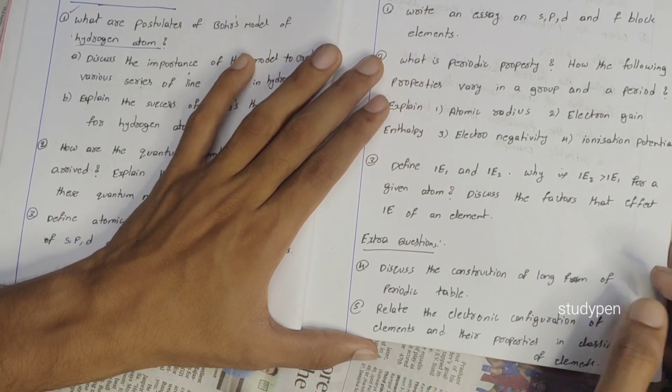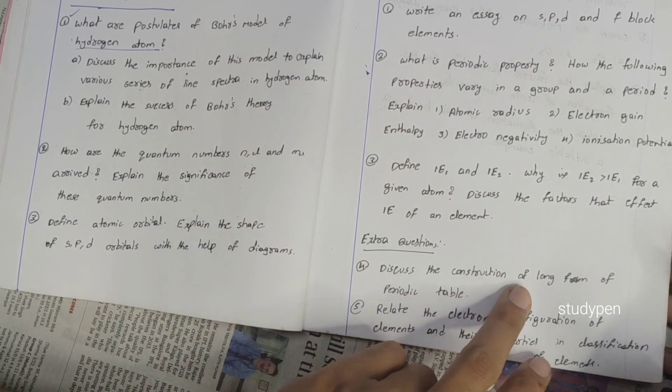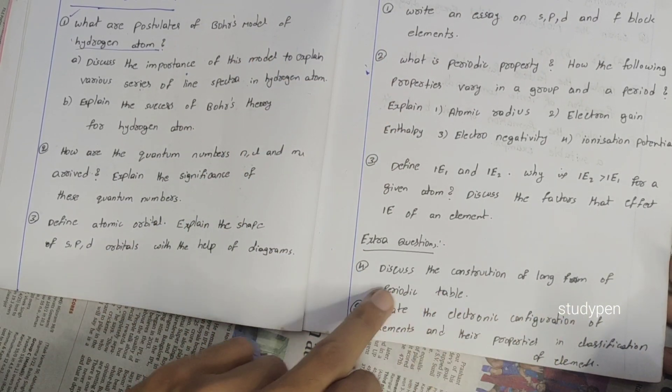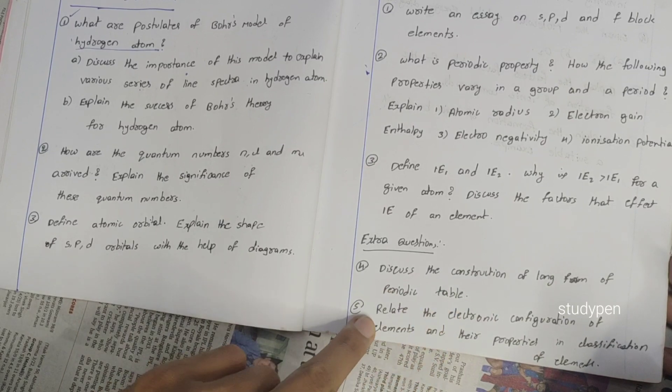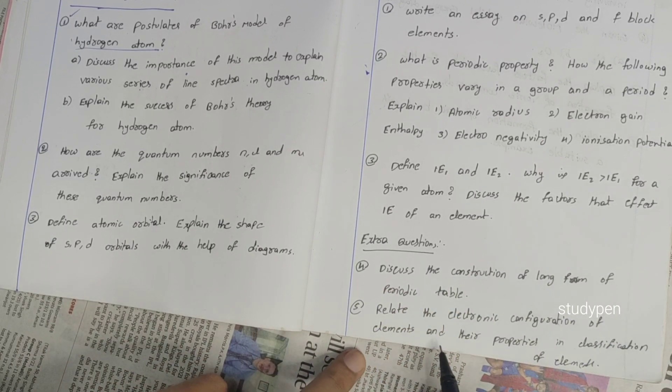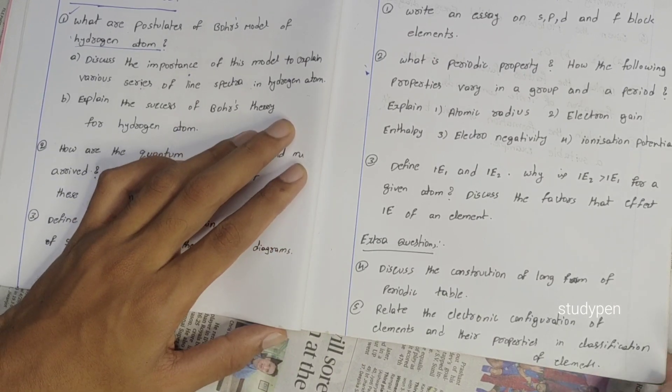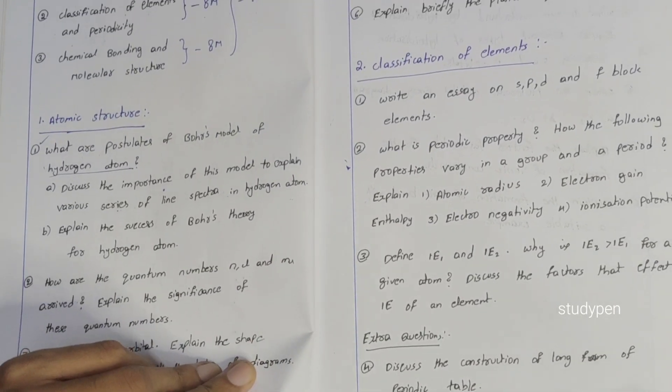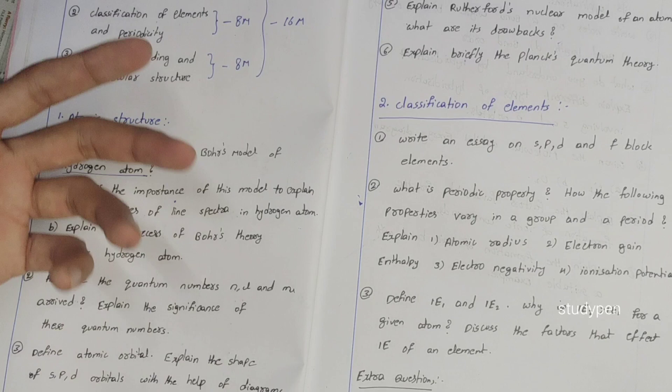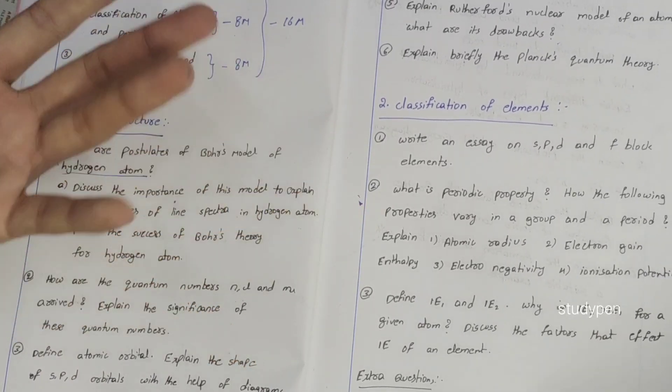This is three questions and atomic structure is three questions, six questions complete. Extra question: discuss the construction of long form of periodic table and relate the electronic configuration of elements and their properties in classification of elements. Mainly the three questions, plus extra three, four, five, one, five.